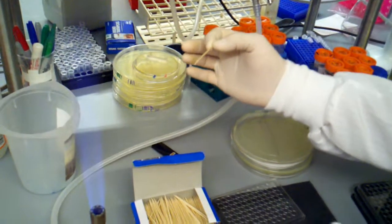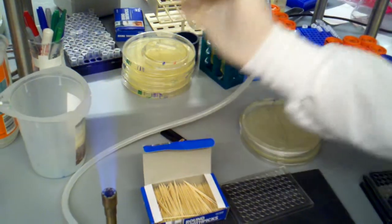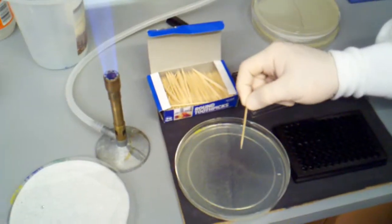In order to actually inoculate one of these wells, you're going to grab a toothpick, quickly flame it, and then you're going to pick a single colony.